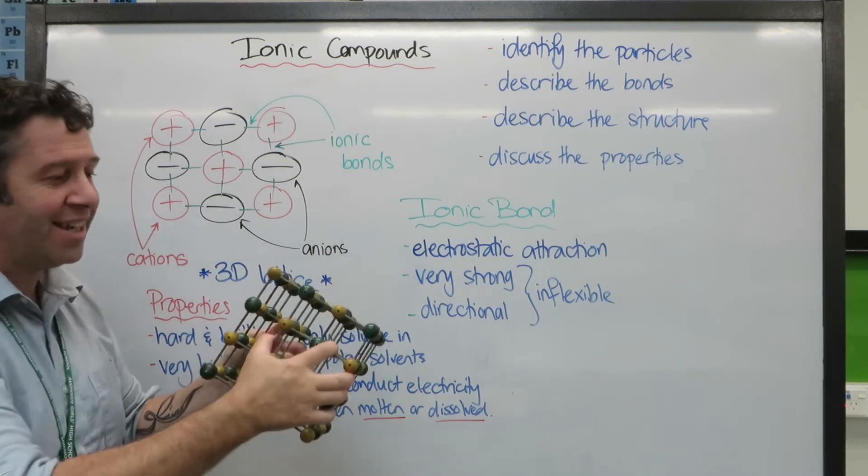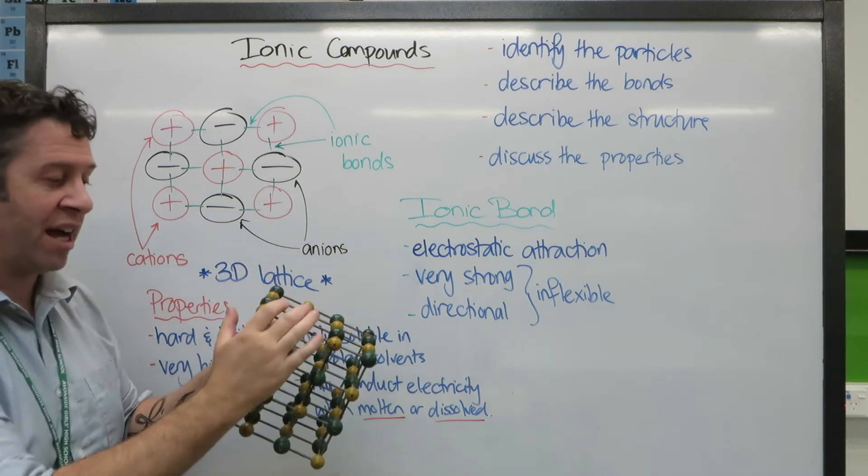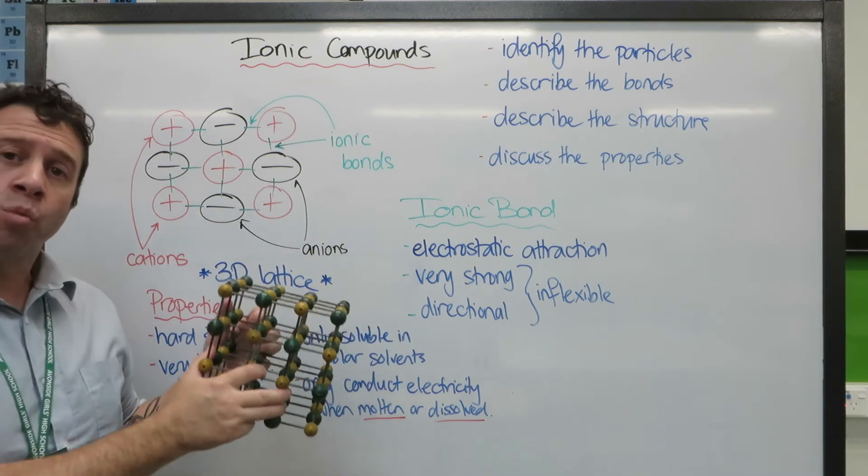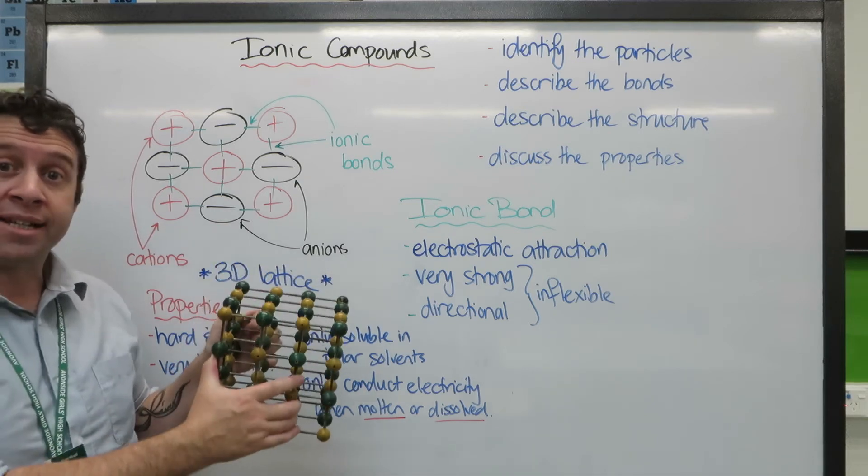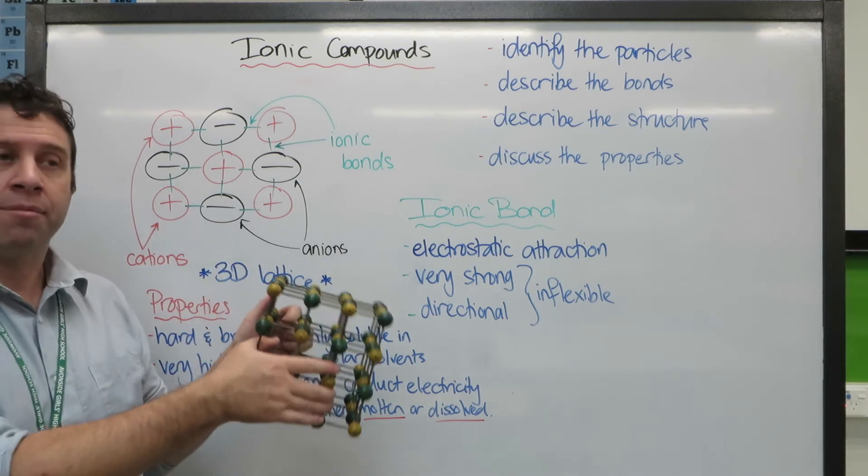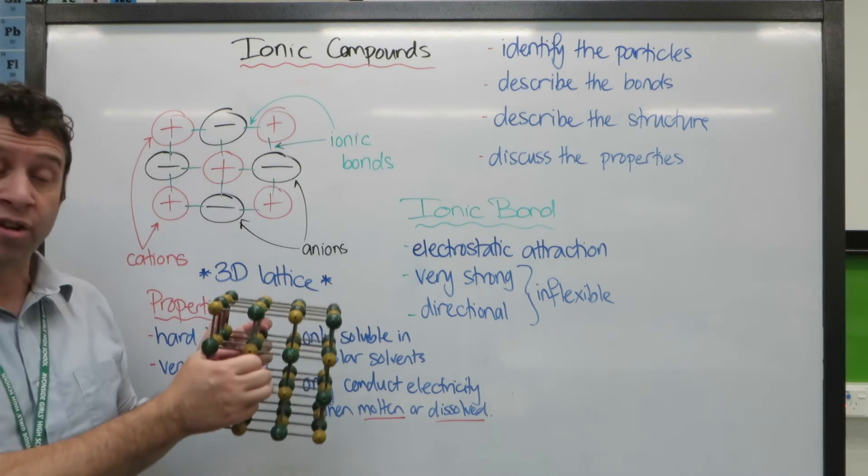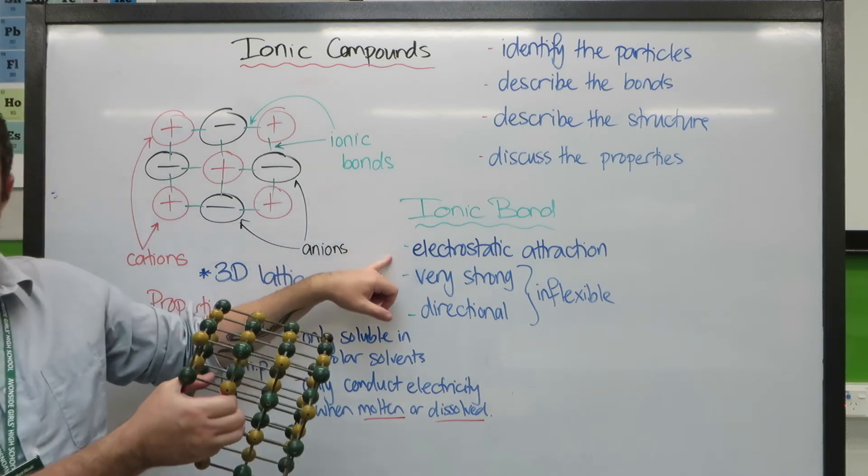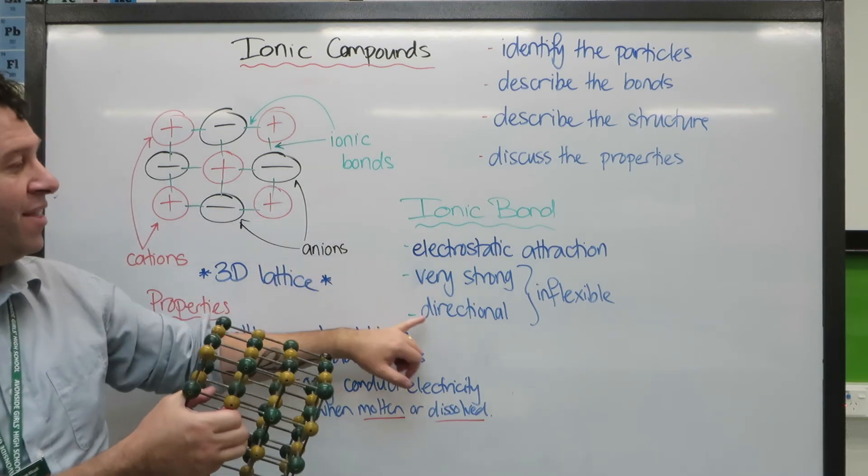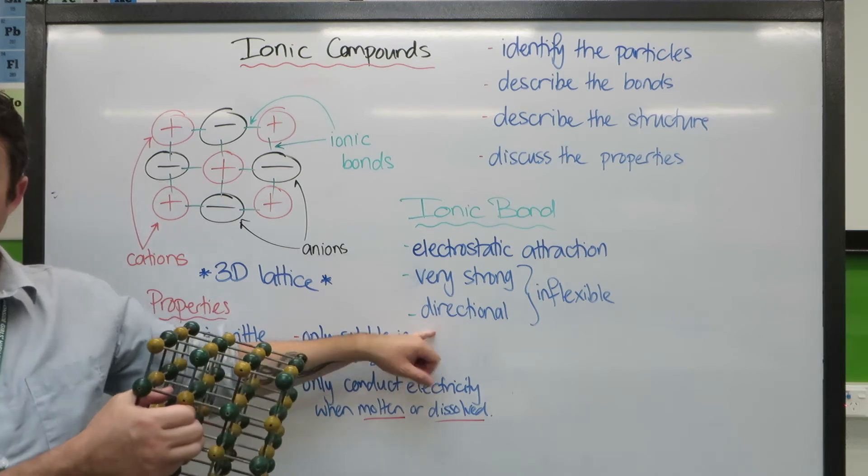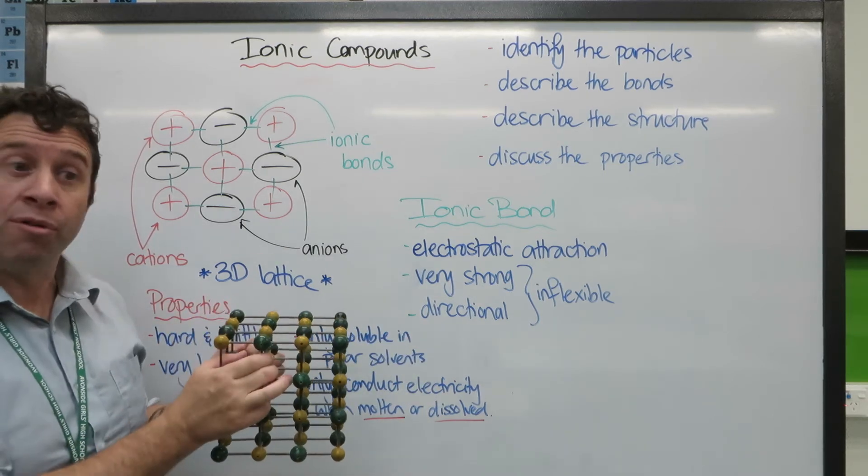We can't bend or move these ions without shifting everything around it. So this is why it's not malleable or ductile like metals. It's a similar type of attraction - theirs is also an electrostatic attraction, but there's a non-directional for their particles, which is why the particles can be moved.